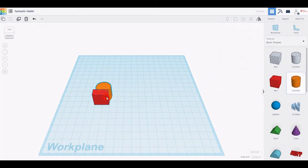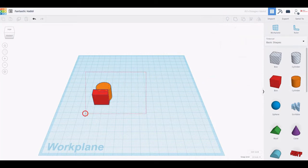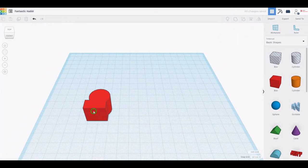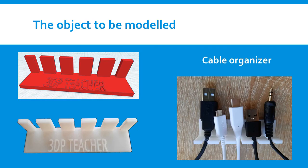Tinkercad works quite simply, by dragging a shape onto the workplane, modifying it, and combining it with other shapes. In this tutorial, we will learn how to 3D model a cable organizer, an object designed to prevent various cables from getting tangled. We will use some simple features to create the geometry and to customize it by adding a text.